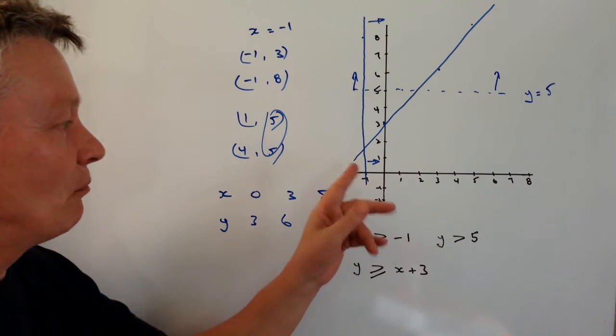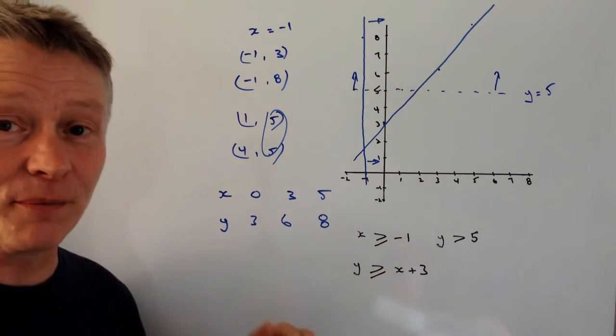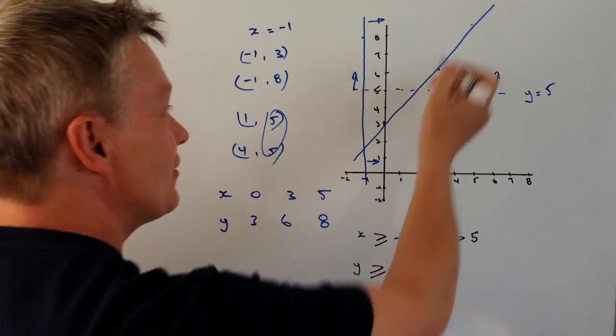And that line means that it's Y is greater, so it's going to be on the left hand side. So it's this bit here.